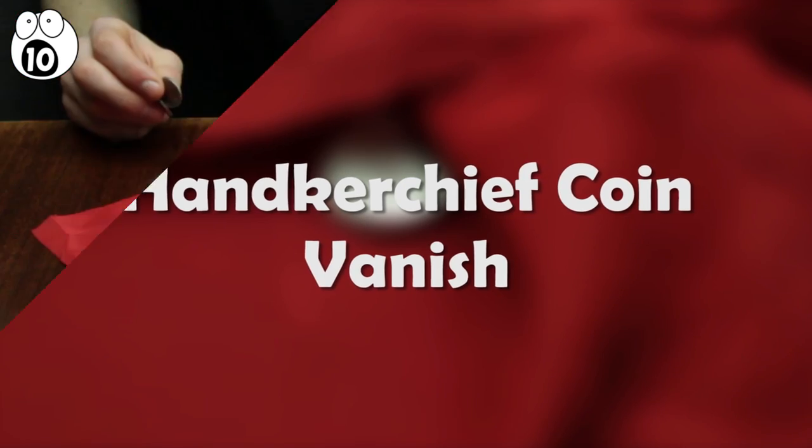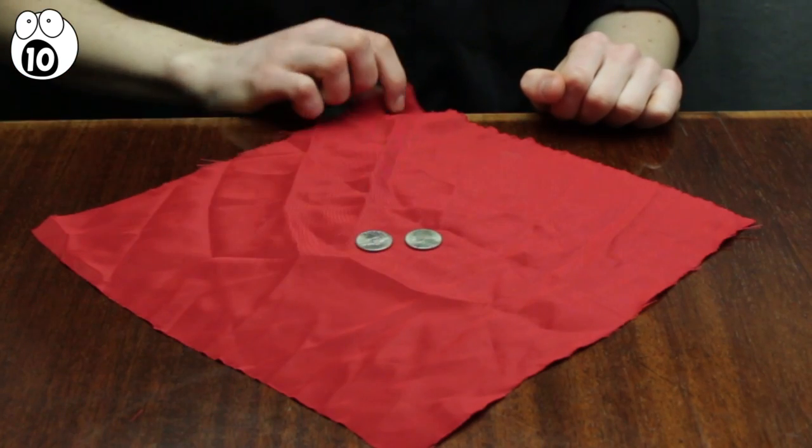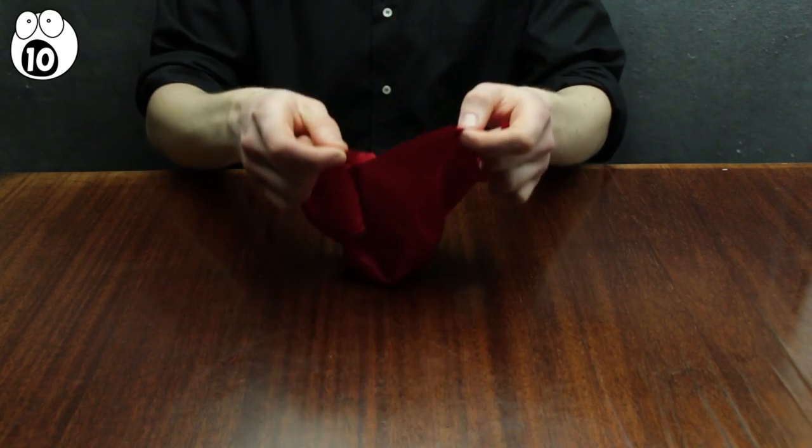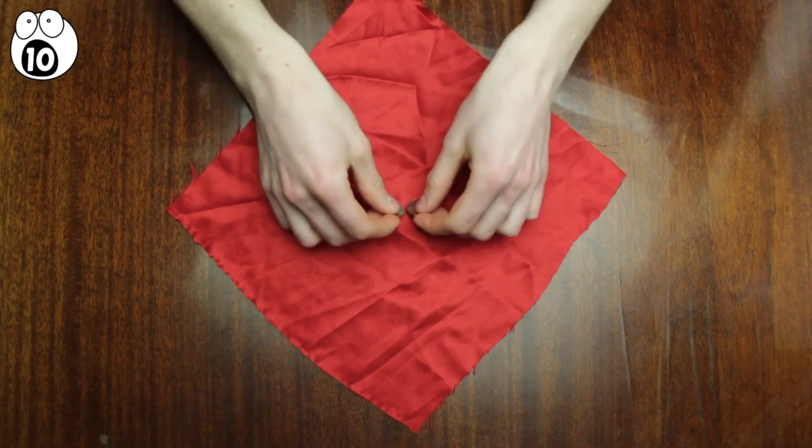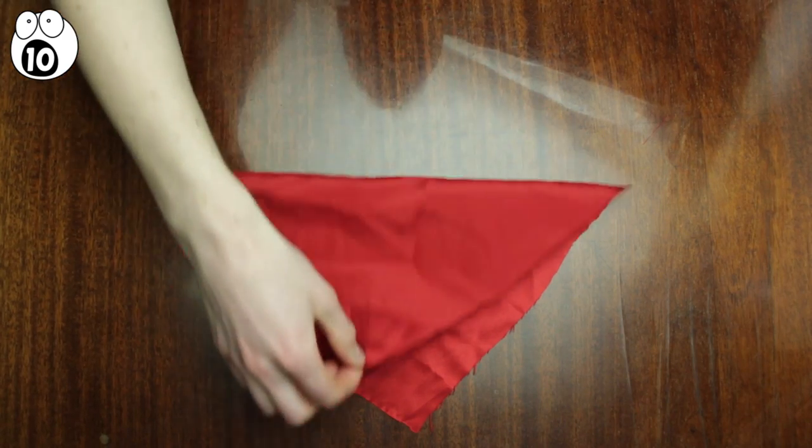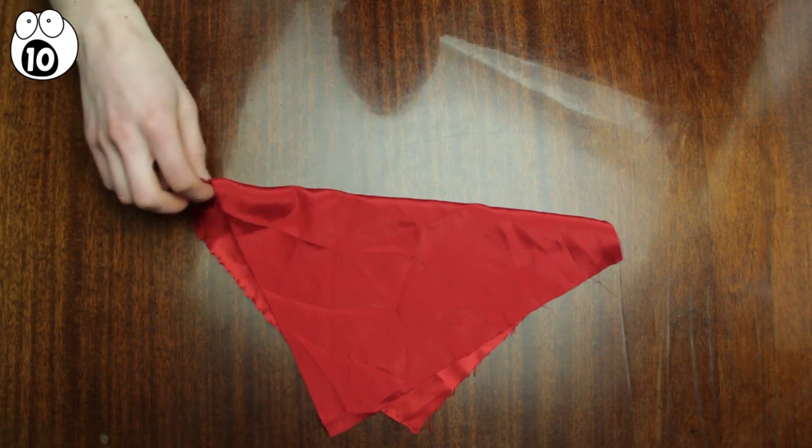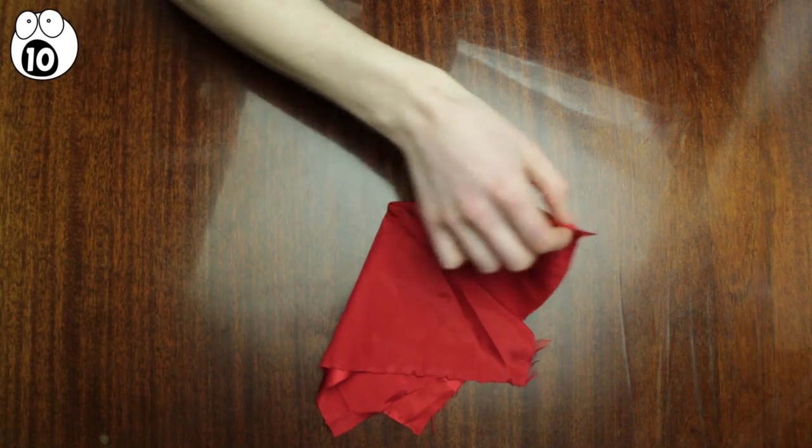Number 10, handkerchief coin vanish. Watch as these two coins are placed in this hanky. Two taps to prove they're still there. Now the coins have disappeared. With this one, make sure to fold the hanky from peak to peak with a gap at the top. Fold one side over like this and the other over in the same way.